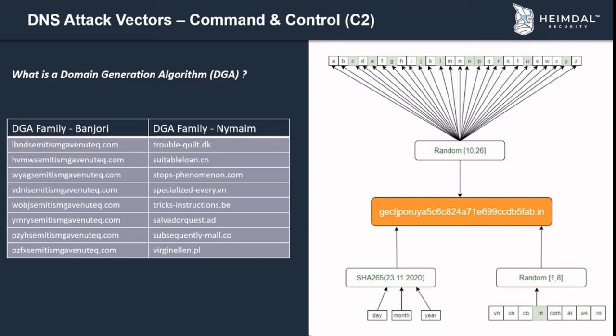While it's possible to pre-generate domains for date-based DGA families, there are too many DGA families to block them all, and blocking today's domains doesn't guarantee stopping tomorrow's. As long as the infected file remains on the computer, it will always try to reconnect to its bot master. This is why strong DNS protection is essential.